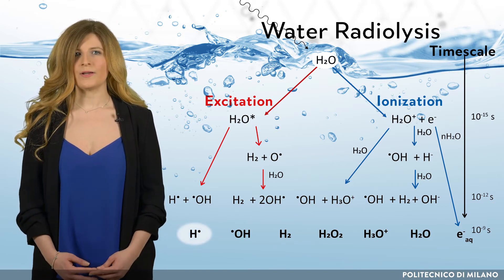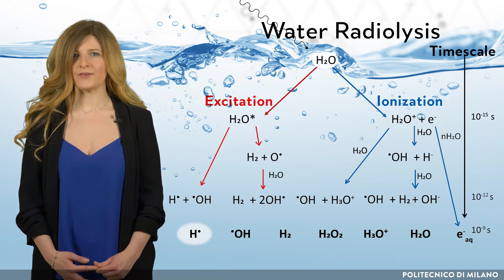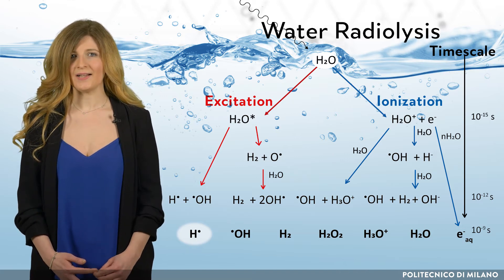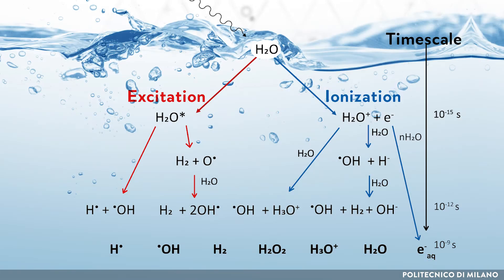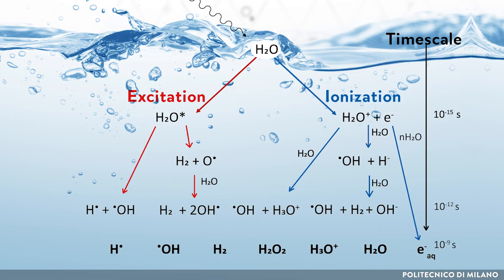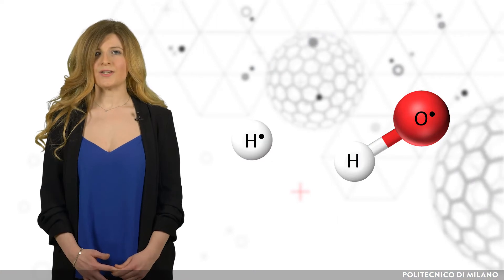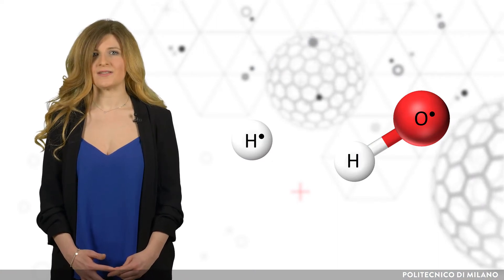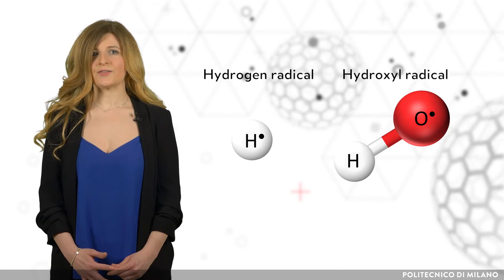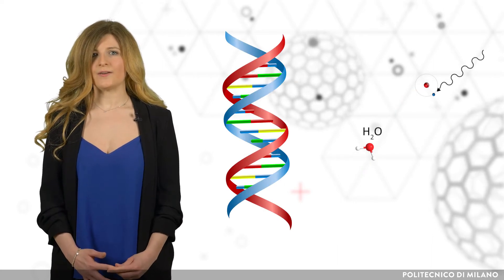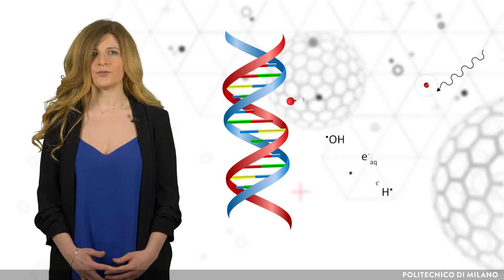A radical is an atom, molecule, or ion that has an unpaired electron that makes it highly chemically reactive. The excited water molecule can dissipate excess energy by bond breakage to produce hydroxyl and hydrogen radicals. The radical ion of water can dissociate to produce a hydroxyl radical and a hydrogen ion. To sum up, ionizing radiation produces very reactive radiolytic species, such as hydrogen and hydroxyl radicals. These species could be either powerful oxidizing or reducing agents.